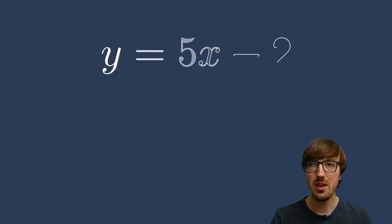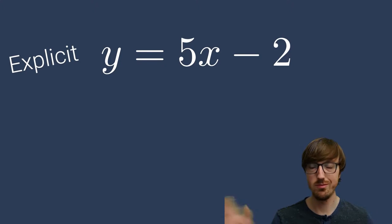First up, I'll show an explicit function. Here we see y equals 5x minus 2. It's so simple. We have x as the inputs, y as the outputs. You can see on the right hand side there's no notion of y. Y doesn't depend on itself.